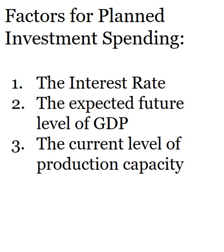Knowing that planned investment spending is something businesses wait for the right time to do, here are three factors that influence those decisions. The first one is the interest rate — do businesses like interest rates to be high or low when they decide to make big purchases? The expected future level of GDP — do they predict more sales in the future, meaning this is a great time to expand? Or do they expect a decline in sales, meaning they should not make big expenditures now? And the final factor is the current level of production capacity — can the business make as much as they need to keep up with their sales, or do they need to spend money to meet demand?